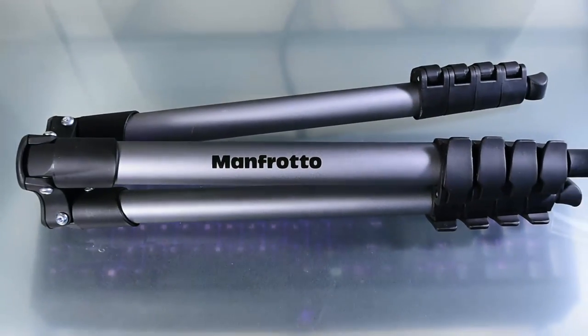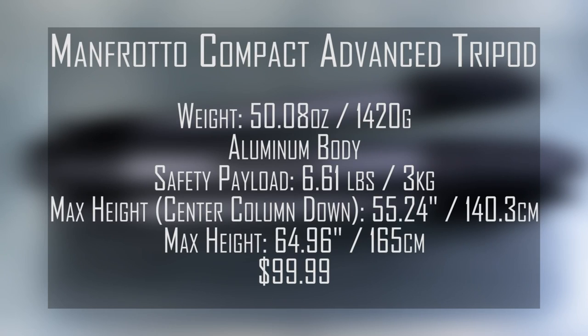The Compact Advanced is a medium-weight tripod coming in at 50 ounces with a thicker aluminum body than the Compact Action. This helps to carry twice the weight, having a safety payload of over six and a half pounds.